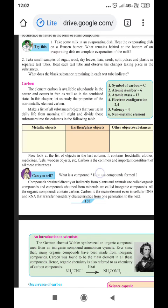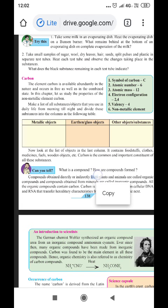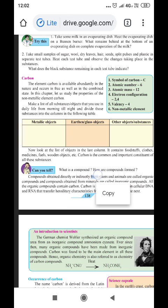Carbon. The element carbon is available abundantly in nature and occurs in the free as well as in the combined state. In this chapter, let us study the properties of the non-metallic element carbon.